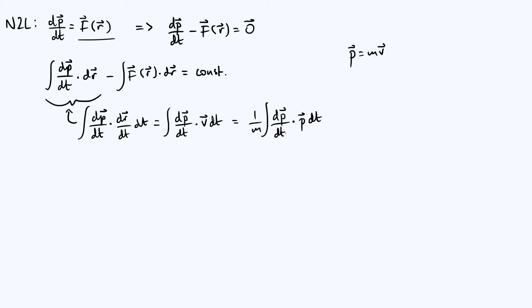And then again, you can kind of think of these dt's as canceling, and this gives 1/m times the integral of p dot dp. Now this is good because the integrand is just p and integrating with respect to p, so we should be able to make some progress here.